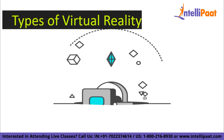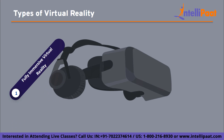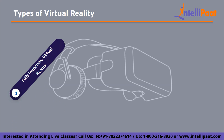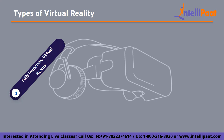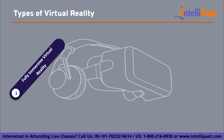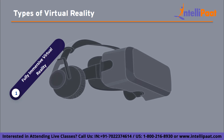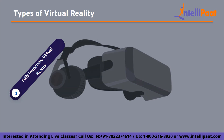Now let's see the types of virtual reality. The first type is fully immersive virtual reality. This type of virtual reality completely surrounds you, making you feel like you're actually in a different world. With a special headset and sometimes handheld controllers, you can see and interact with the computer generated environment. It's as if you've been transported into a different place, with sights, sounds, and even touch sensations to fool your senses into believing it's real.